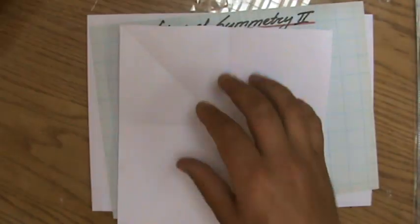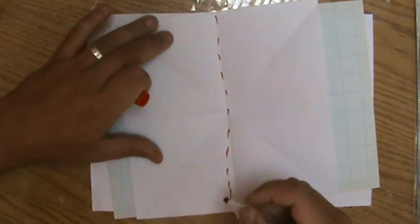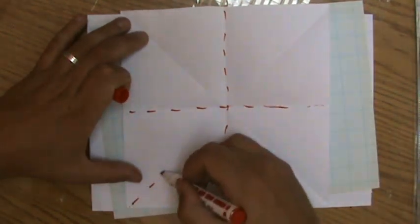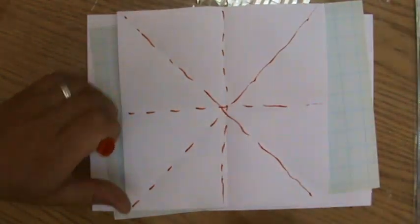It needs to be exactly on top of each other. So if I quickly sketch that without a ruler, for a square, I have one, two, three, four lines of symmetry. Very good.